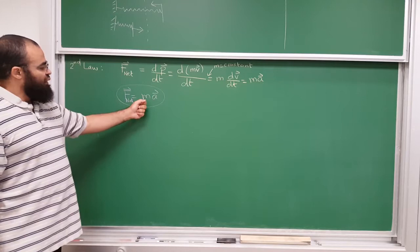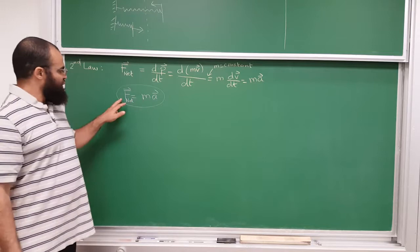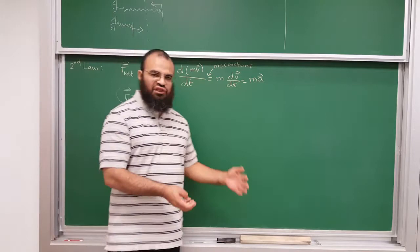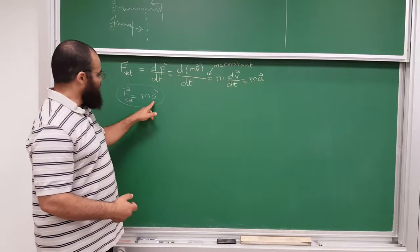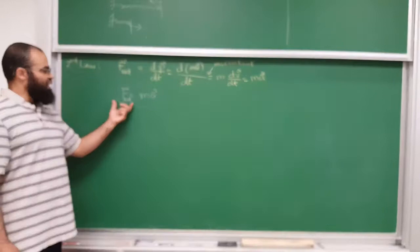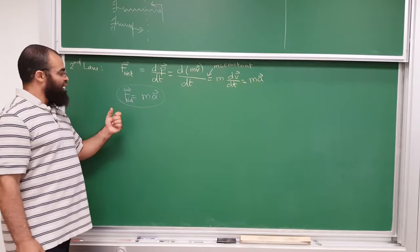Newton doesn't tell you how to get the net forces. You have to find the net forces, then use them and the mass of the object to calculate the acceleration. And if you know the initial position of the object, you know the initial velocity, and you have just calculated the acceleration, then you know the position of the object at all future times and the velocity at all future times. It's your job — Newton doesn't tell you how to calculate the net force.